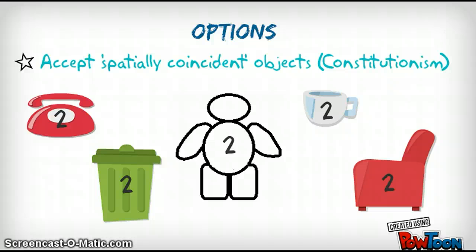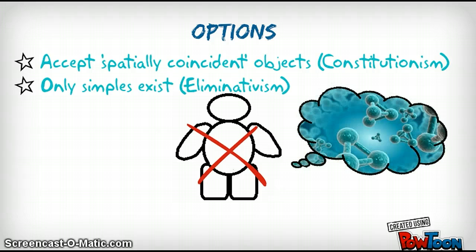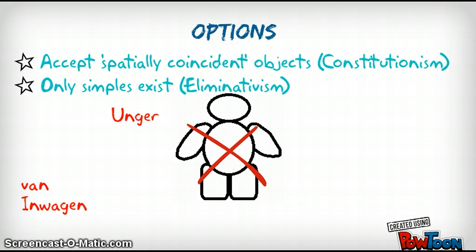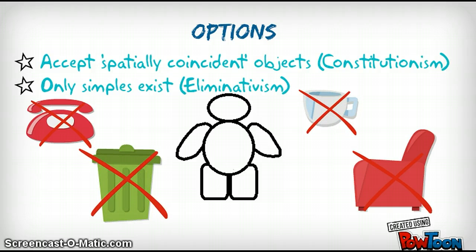Another option is to claim that only simples exist, a view known as eliminativism. According to this view, White Rider himself does not really exist. In fact, only the simples of which he's composed exist, such as the atoms from which the Play-Doh is made. Philosophers who endorse this view, or something like it, are Peter Unger and Peter van Inwagen. The problem with it, of course, is that where we formerly had two objects, we now have none. The chair that you're sitting on does not exist. Your telephone, your teacup, your rubbish bin — none of them really exist. Once again, you have been miscounting for your entire life.